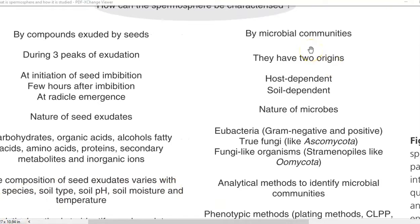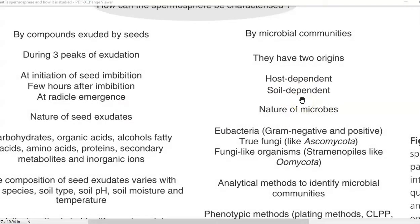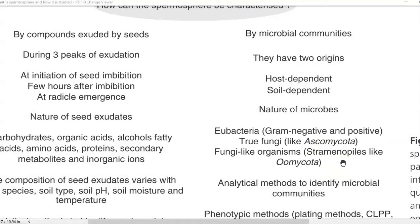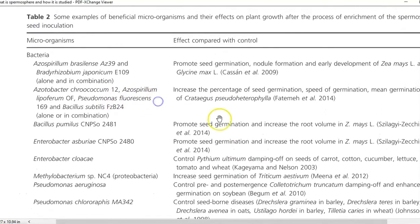The microbial communities present in the spermosphere can be of two origins: soil-dependent microorganisms, and microorganisms originating from the seed itself. These are the two places from which microbes will enter the seed system. The microbes include a lot of gram-negative and gram-positive bacteria, true fungi such as those belonging to Ascomycota, and even certain fungi-like organisms called Straminophiles, for example Oomycota. These groups of organisms are present in significant amounts in the seed.